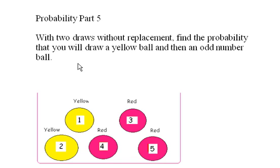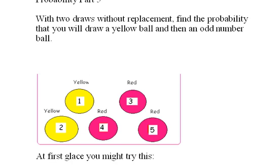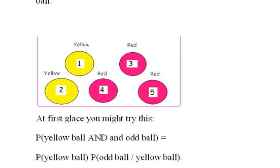At first glance you might try this: the probability of a yellow ball AND an odd number ball equals the probability of a yellow ball times the probability of an odd ball given that you just drew a yellow ball.